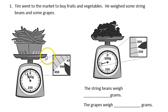We need to determine the weight of each of those. If I look at my string beans, I have a blow up of the reading on the scale. Looking at the markings on my scale, I can see we have 450 grams, followed by 460 grams. There is a mark showing the midpoint. The midpoint would be 455 grams.